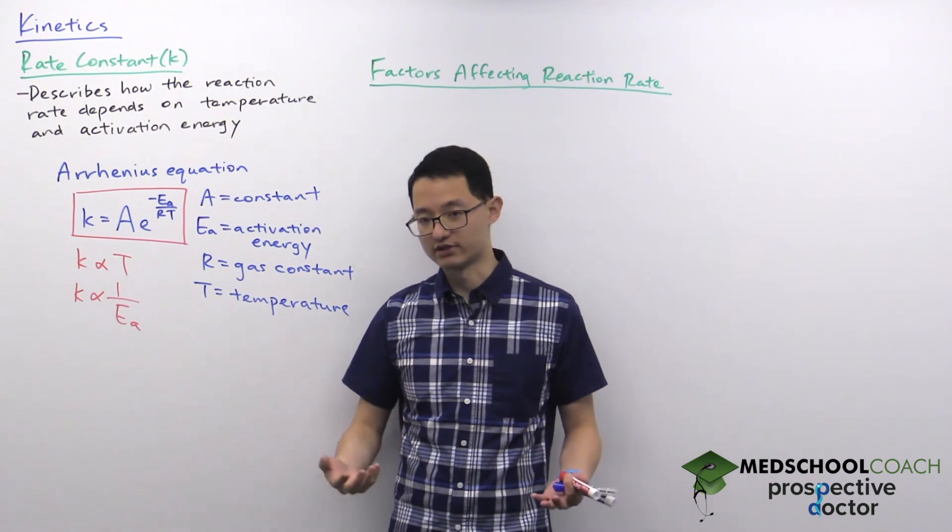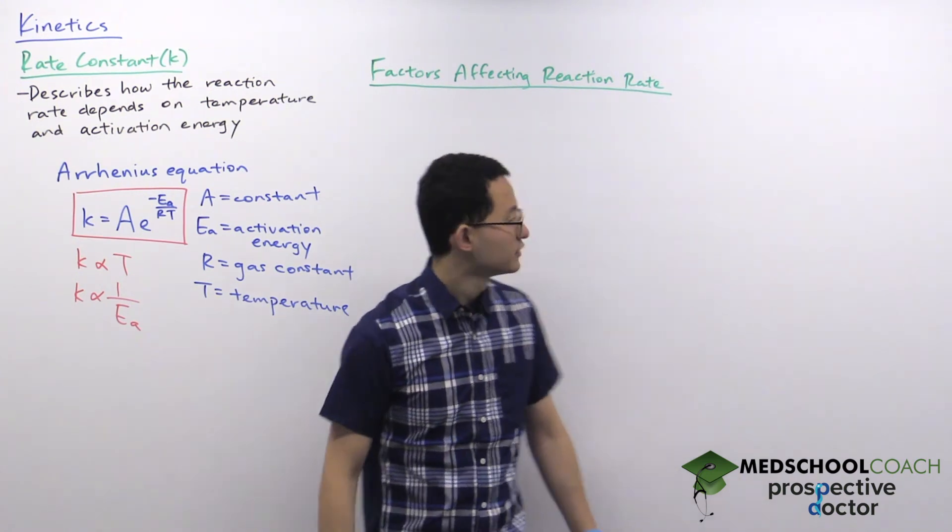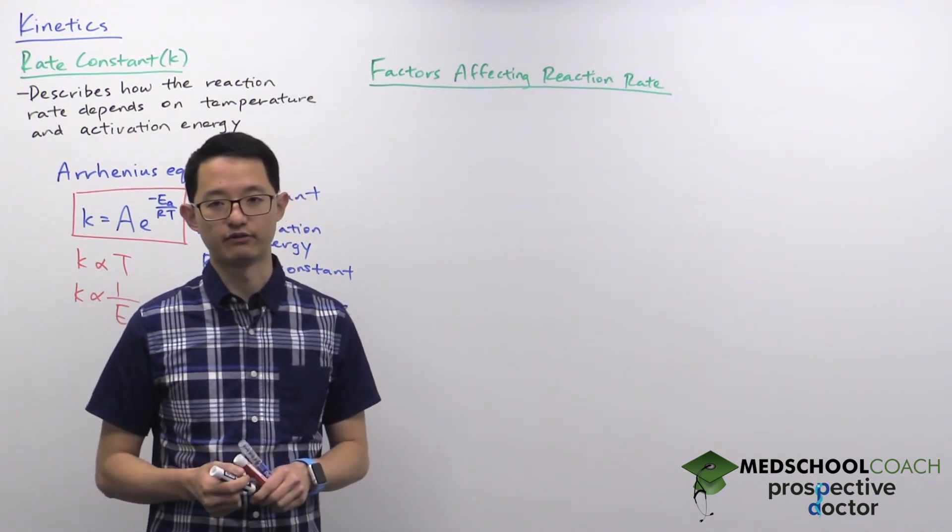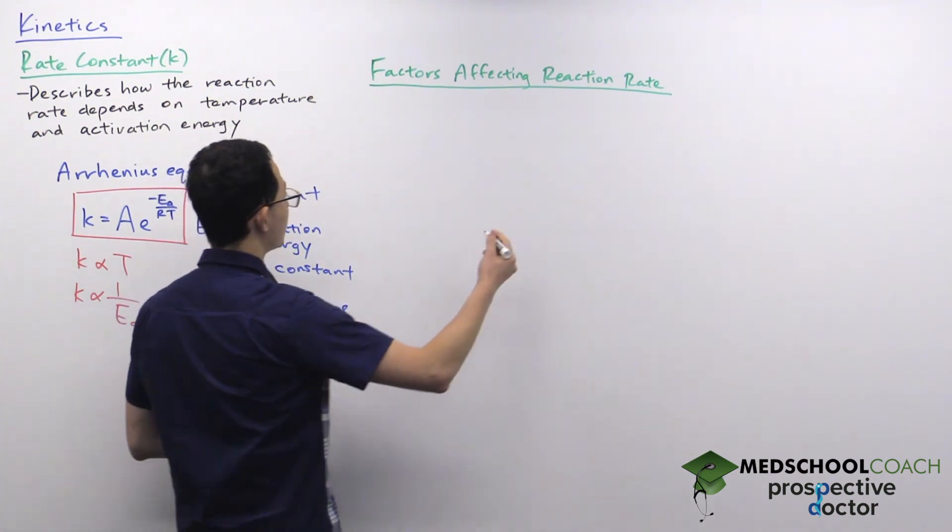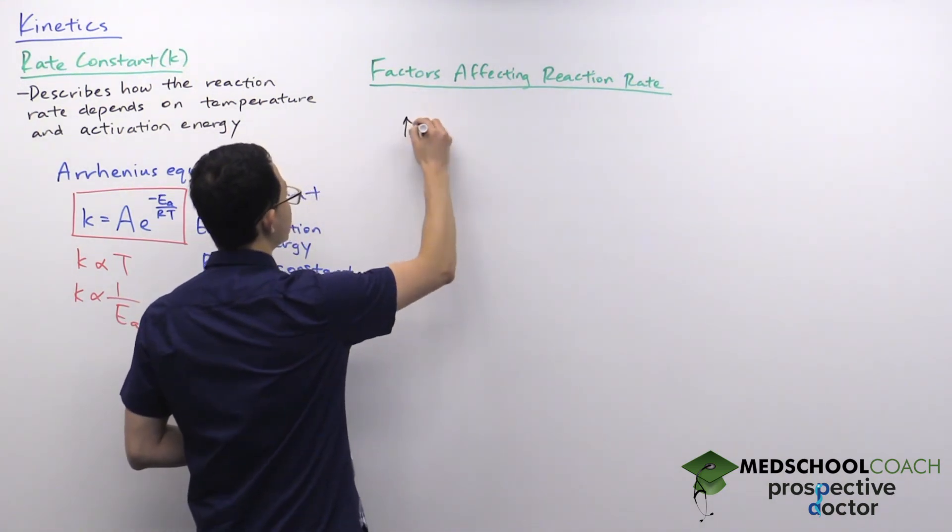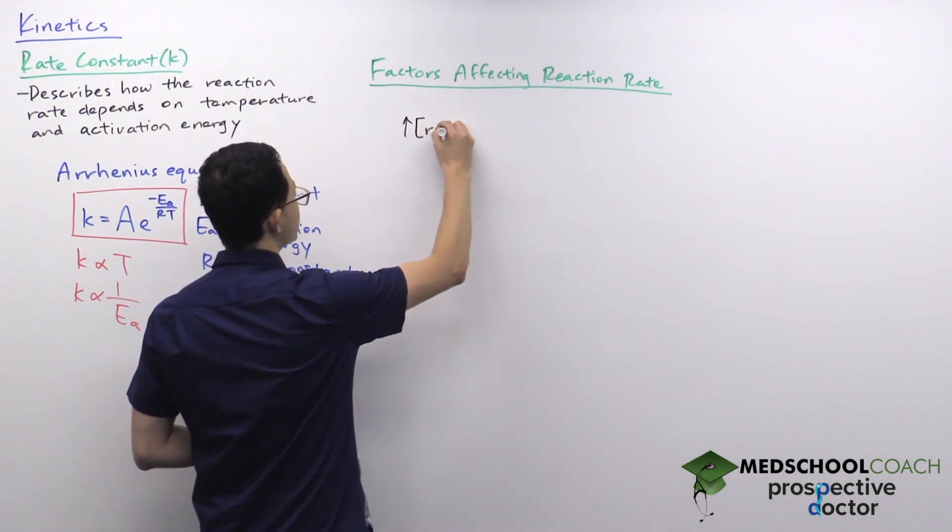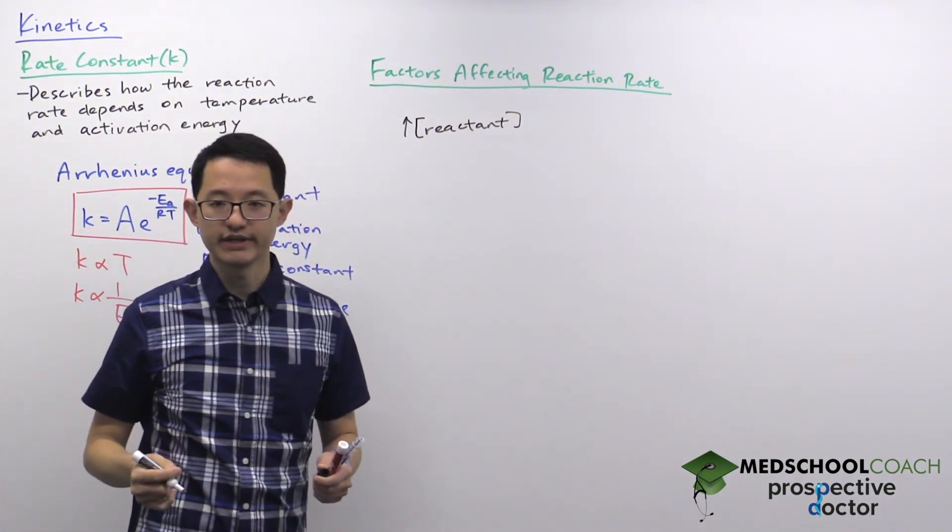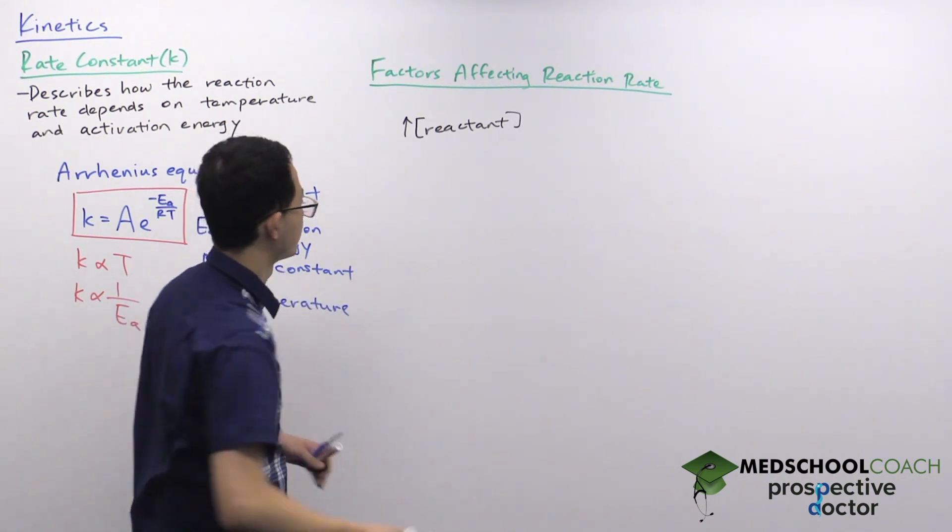So over here we can really summarize the different factors that can increase the rate of a reaction. One factor would be to change reacting concentrations. In particular, if you increase the reacting concentrations, that can increase the reaction rate, and we've seen this with rate laws many times.